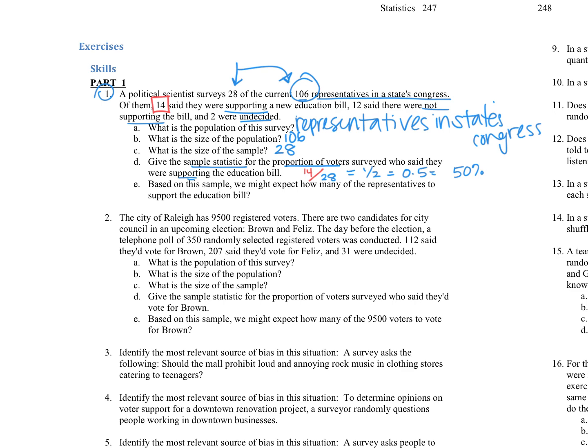So you could say about 50% of those sampled were supporting the education bill. So now based on that sample, we might expect how many of the representatives to support the bill. So if this sample was representative of the representatives, we're talking about really this 50%, but of the 106. So 50% of that 106. Well, you can take half of 106 if you'd like it like that. On a calculator, you could also enter this percent as a decimal, so 0.5, and then we multiply it by 106, which is going to get us 53.